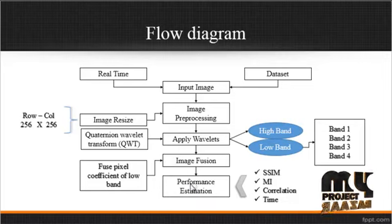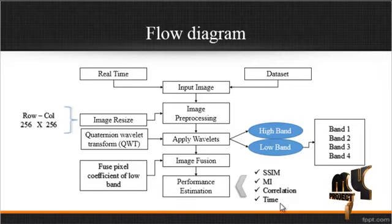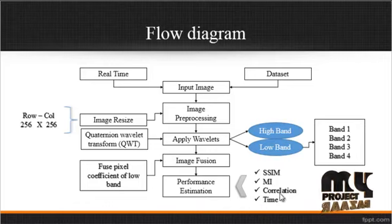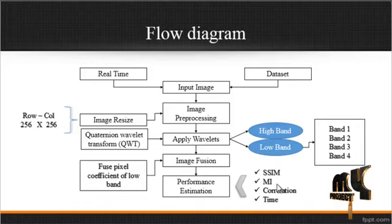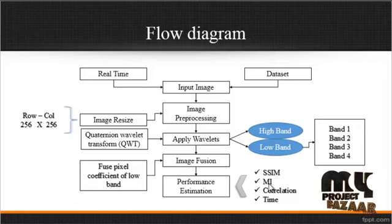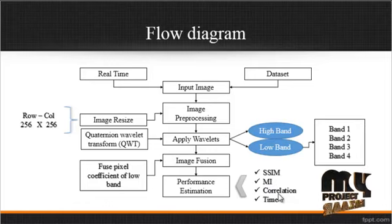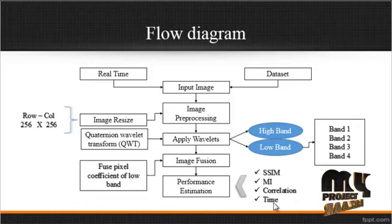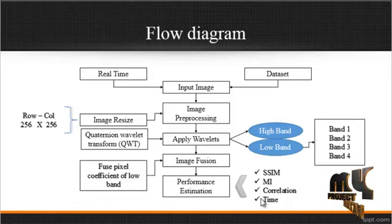The performance is analyzed by four types of performance measures: SSIM, MI, correlation, and time. SSIM indicates the Structural Similarity Index Matrix, MI indicates Mutual Information, and the correlation and time are also estimated. By these four parameters we can justify whether the process is efficient or not.